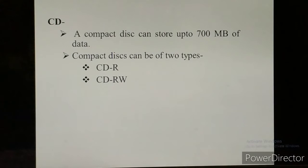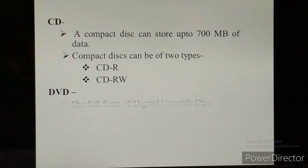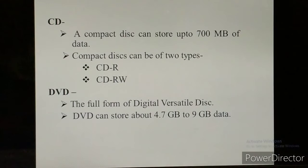Next is DVD. The full form of DVD is Digital Versatile Disk. It is very similar to a CD but it stores a larger amount of data. A DVD can store about 4.7 GB to 9 GB of data. A DVD is made of several layers of plastic.